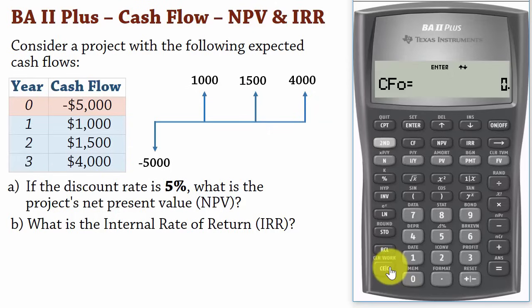CFO is the initial cash flow value or in our case, an initial outlay of $5,000. So press 5000 and make it negative by pressing the plus minus button. Press enter. Press the down arrow button.